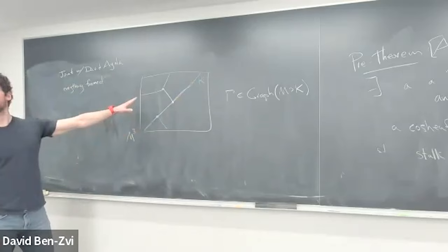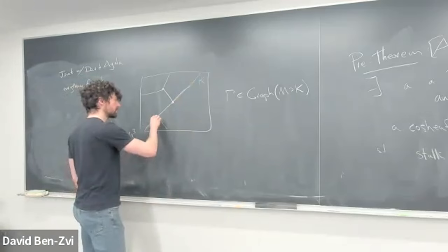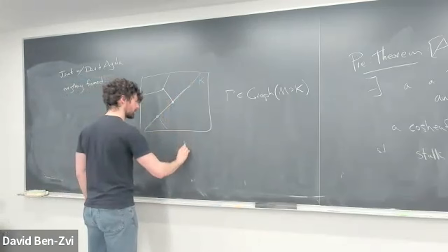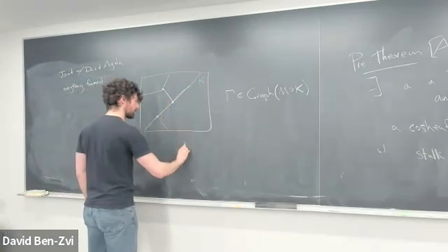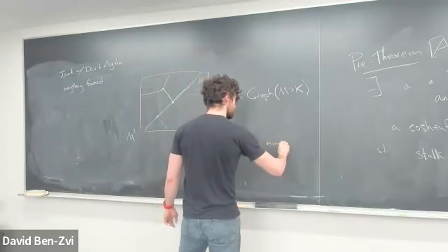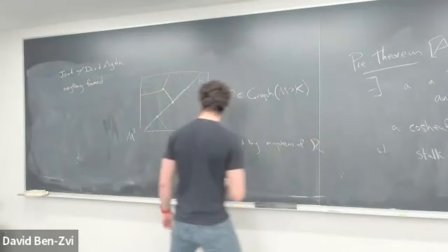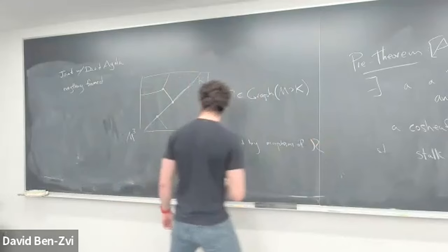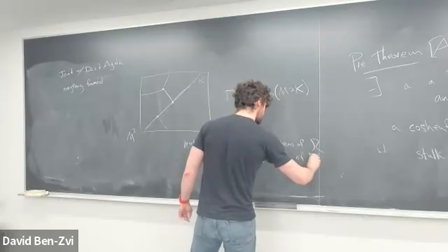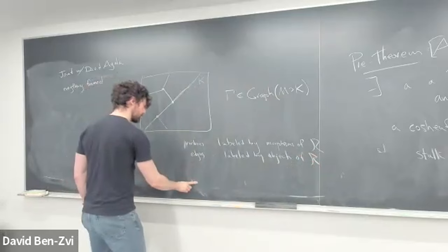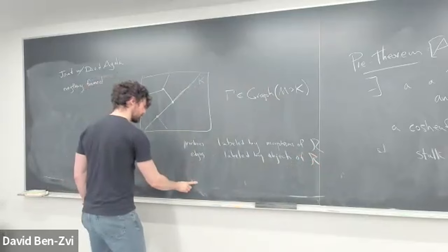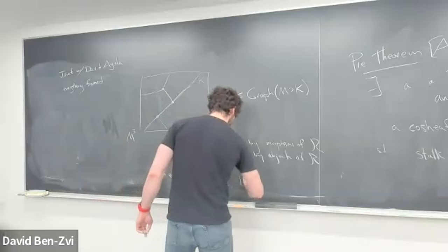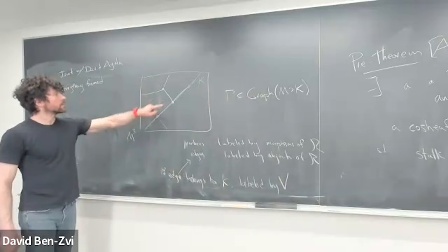There is a point in this graph space. Let me tell you how you're allowed to label it — what the stalks are. For each of these points, the vertices are labeled by morphisms, and the edges are labeled by objects. If an edge belongs to K it has to be labeled by a specific object P.